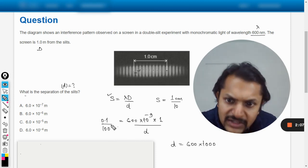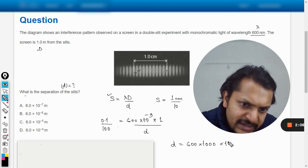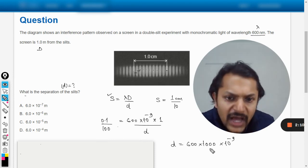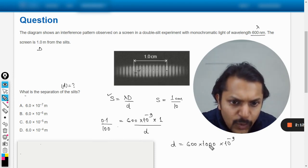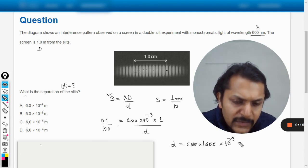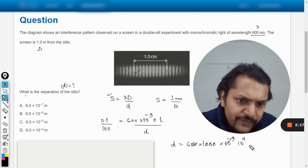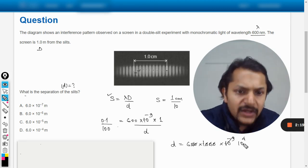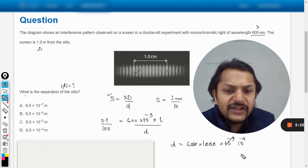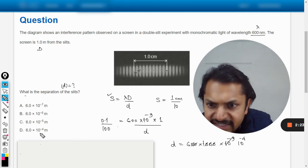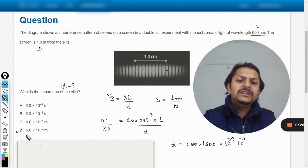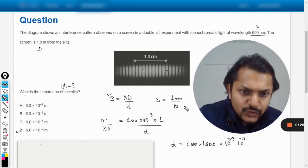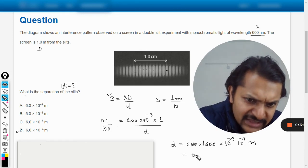So d is equal to 600 into thousand, cross multiply, 10 raised to power minus nine there. So one, two, three, four, five, 10 raised to power four, minus one. So 10 is well, minus four is left. So I think 6 times 10 to the minus four meters should be the correct answer.